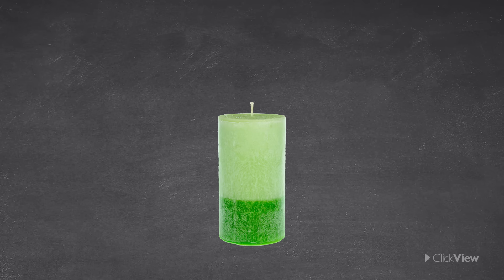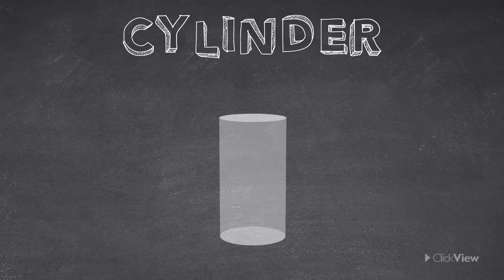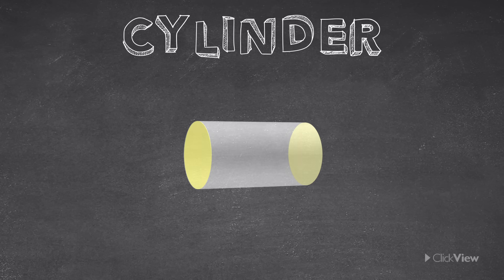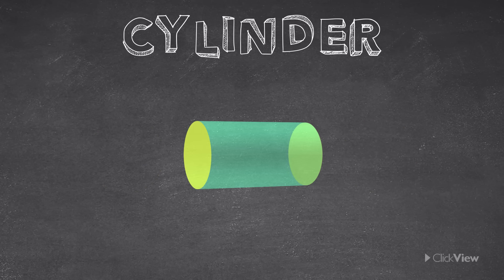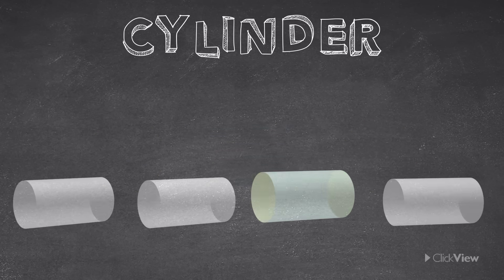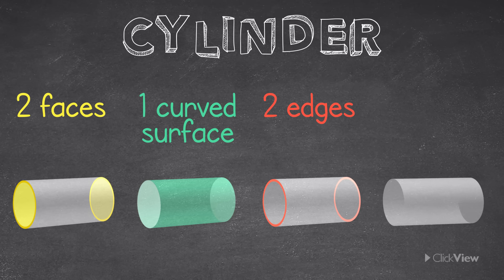This shape is called a cylinder. A cylinder has 2 circles on each end that are the same size, with a tube in the middle. It has 2 flat faces and 1 curved surface. The cylinder also has 2 edges, but no corners.